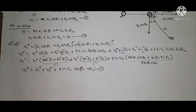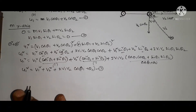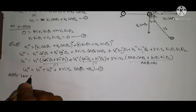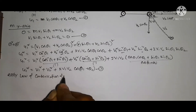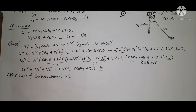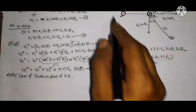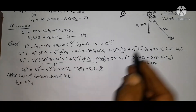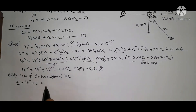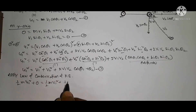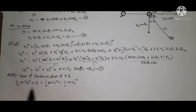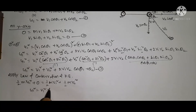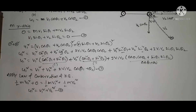Now applying the law of conservation of kinetic energy for elastic collision: total kinetic energy before collision equals total kinetic energy after collision. That gives half M U1 squared plus 0 equals half M V1 squared plus half M V2 squared. Cancelling the common factors, we get Equation 4: U1² = V1² + V2².